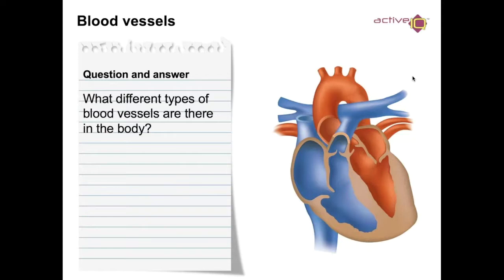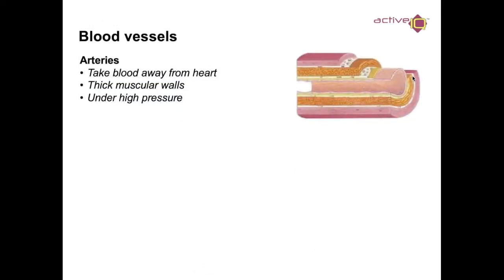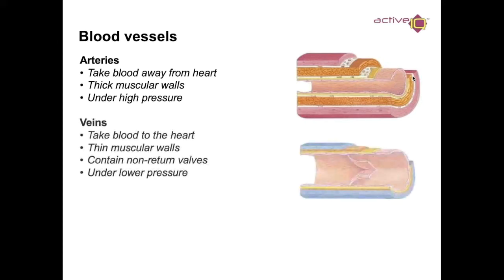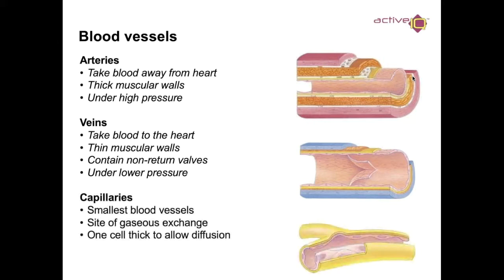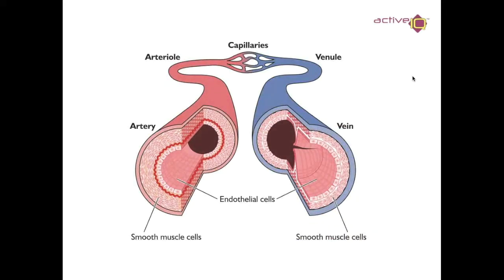What different types of blood vessels are there in the body? First, arteries — arteries take blood away from the heart. They have thick muscular walls and are under high pressure. Veins take blood to the heart — think 'vein in.' They have thin muscular walls, contain non-return valves, and work under lower pressure. Then we have capillaries — the smallest blood vessels, the site of gaseous exchange. They are one cell thick to allow diffusion to take place.